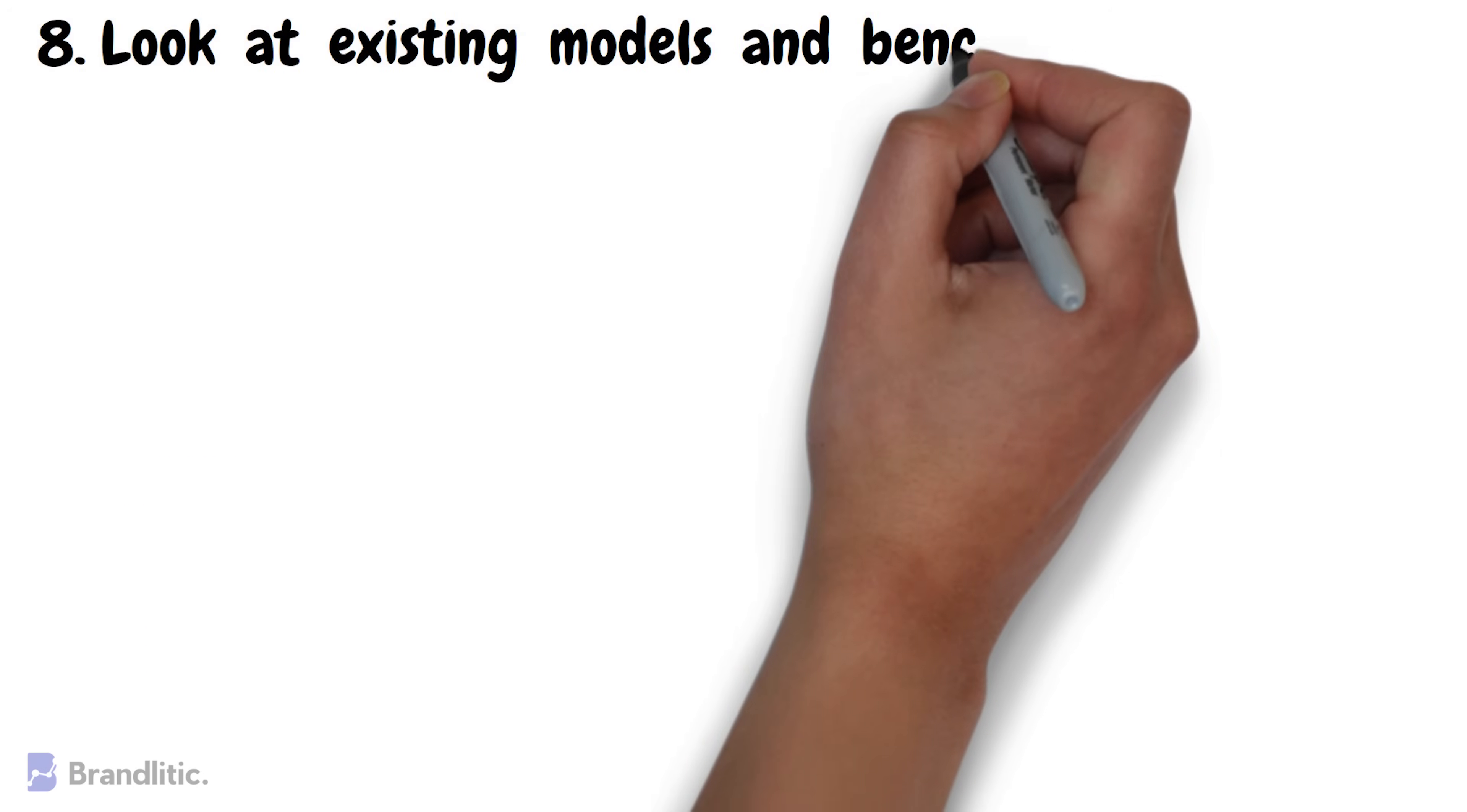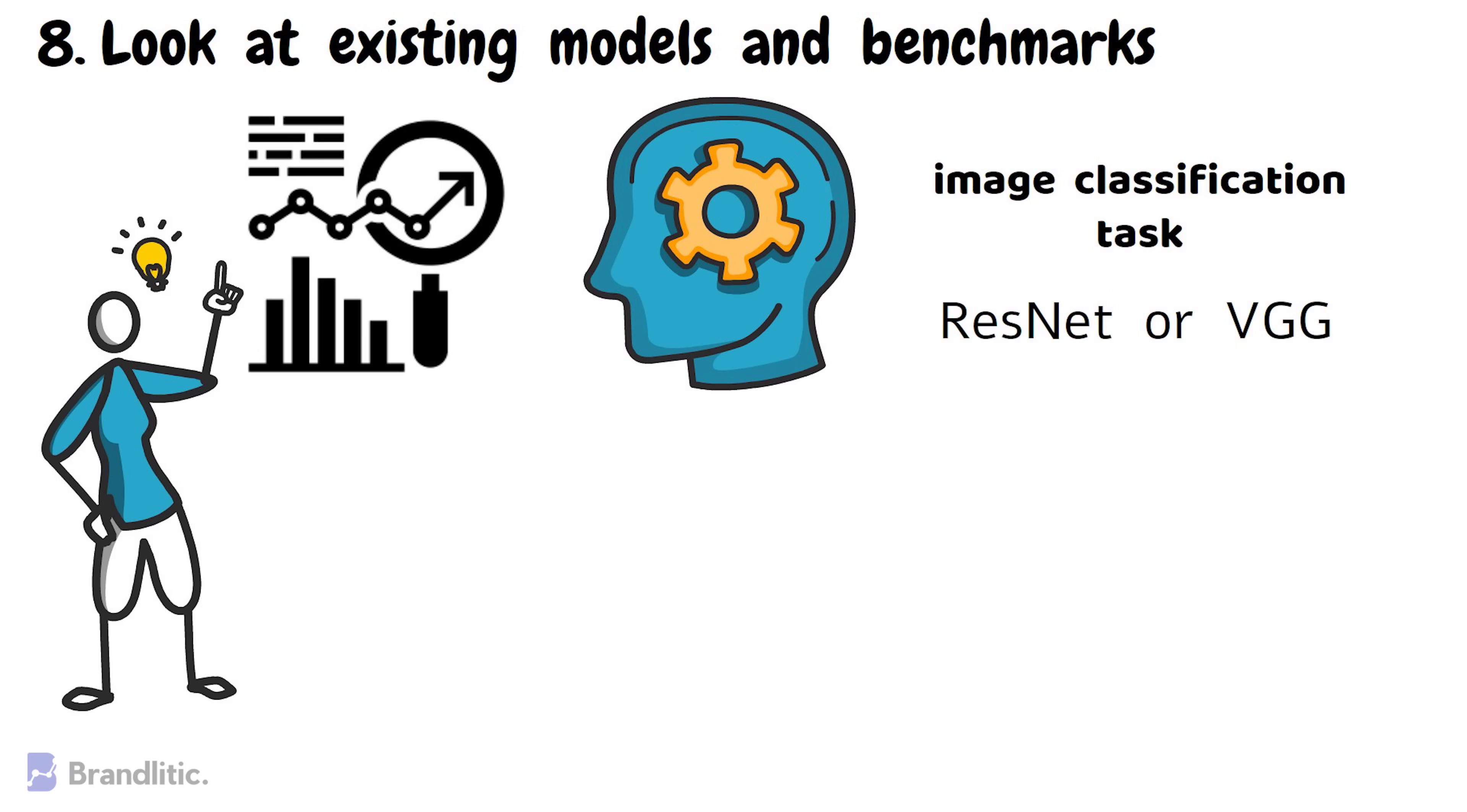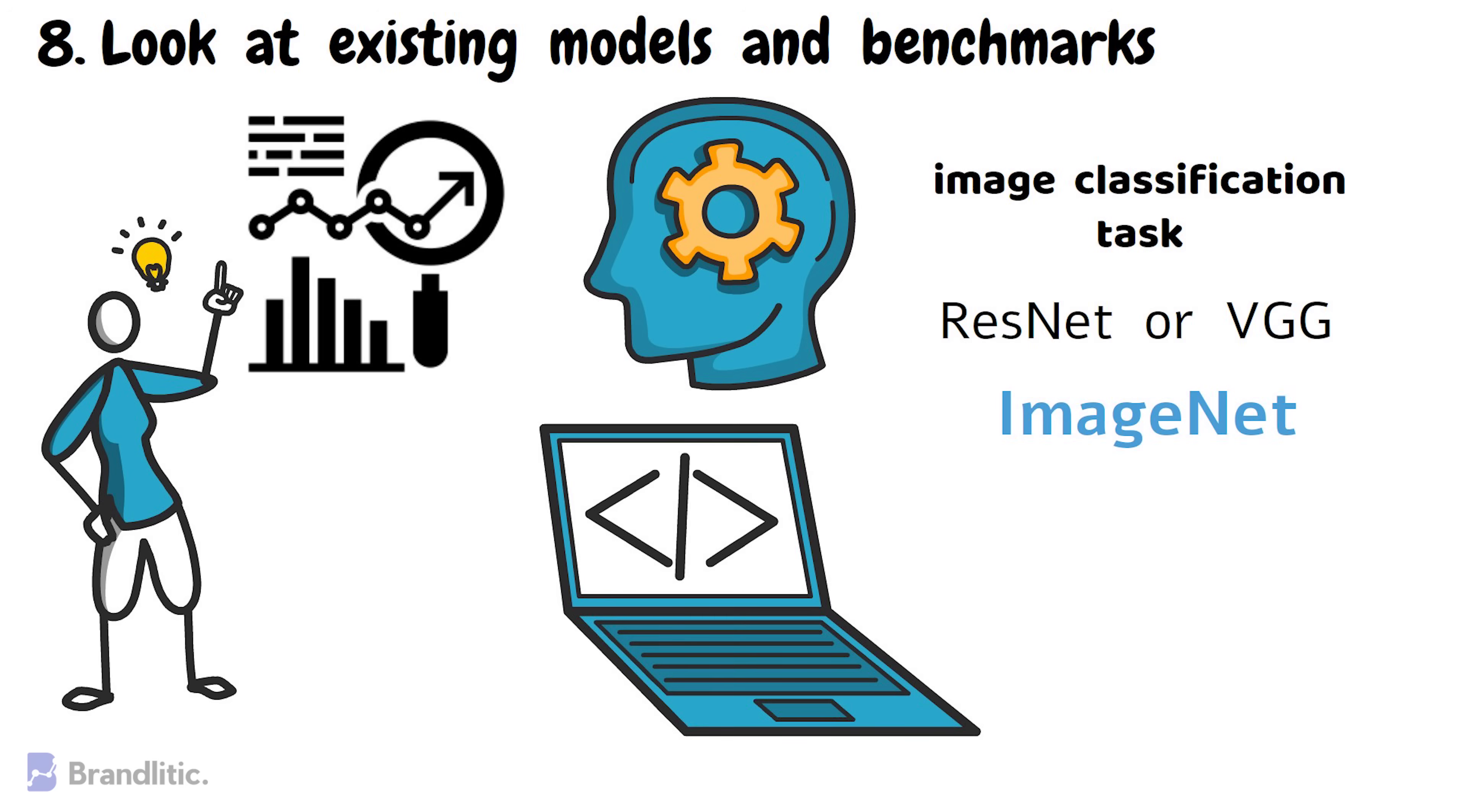Number eight, look at existing models and benchmarks. When choosing a neural network architecture, it's important to look at existing models and benchmarks for the tasks you are working on. This can give you a good idea of what neural network architectures are commonly used for similar tasks and how they perform. For example, if you're working on an image classification task, you can look at existing models like ResNet or VGG and see how they perform on benchmark datasets like ImageNet. This can give you a good idea of what type of neural networks are commonly used for image classification and what kind of performance you can expect.